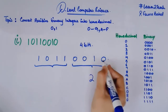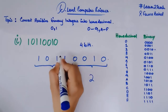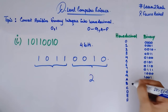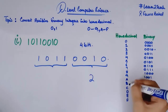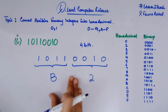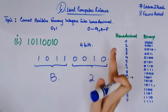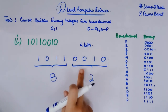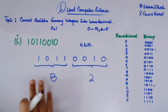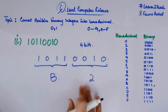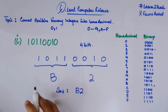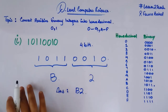For the next group, I have 1011. Looking it up in the table, 1011 equals B in hexadecimal. So the answer is B2. It is that simple — just make groups of four bits starting from the right, then find the hexadecimal value of each group.